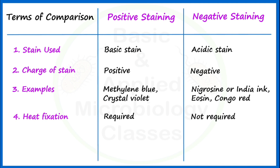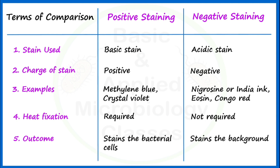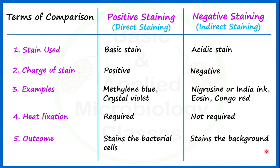The fifth point of difference is the outcome. When we perform positive staining, it results in staining of the bacterial cells. Negative staining never results in staining of the bacterial cells — instead, it stains the background. On the basis of this outcome, positive staining is also called direct staining, because it directly stains the bacterial cells. Negative staining is called indirect staining, because it stains the background and the target bacterial cells are not stained — so it is an indirect means of examining the bacterial cells.